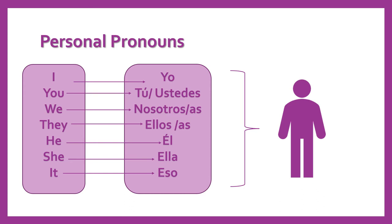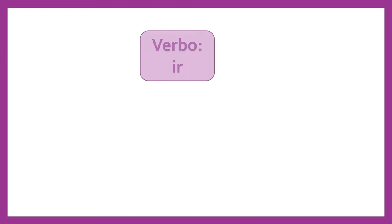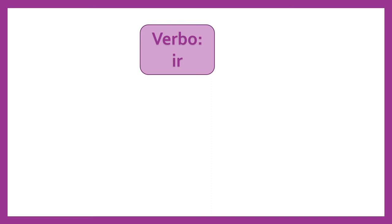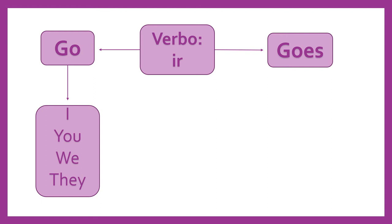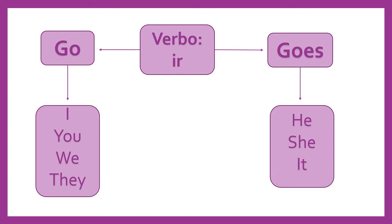And we're going to represent these personal pronouns by this icon. Next, we're going to talk about the verb 'ir'. And we're going to use it in two cases: go and goes. Go we will use with the pronouns I, you, we, and they. And goes we will use with the pronouns he, she, it.